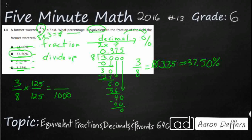So 8 times 125 equals 1,000, which means this is going to be 375 thousandths, which equals 0.375, because this is the thousandths place. And then you can just move it two times to the right.